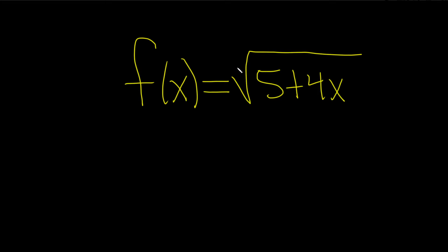Whenever there's not a number here, there's really an invisible two. And so the trick is whenever this number, this is called the index, is even, you take this and you set it greater than or equal to zero.